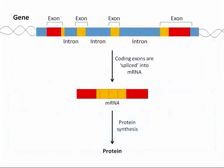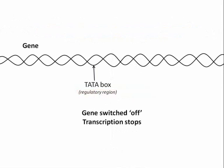A gene is a portion of DNA which encodes for one protein. Genes usually consist of alternating components called exons and introns. An exon is a region of DNA which encodes for a protein, and introns are regions which do not. Genes also contain regulatory regions which can switch genes on or off and ensure that they are expressed in the right cell.